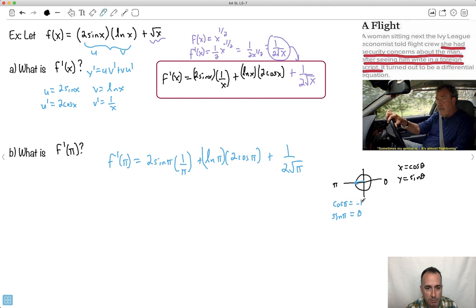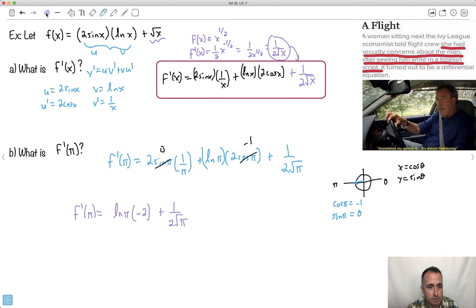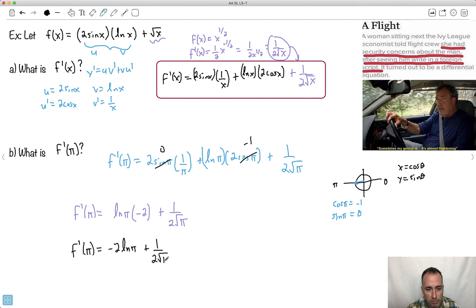That's good, because now I can replace. Anywhere I see a cos π, I make it minus one. Anywhere I see a sine π, I make it zero. So f primed of π equals - this whole thing cancels out - I just got natural log of π times minus two, all that plus one over 2√π. So f primed of π must be minus 2ln(π) plus 1/(2√π). This should be my answer. This is my exact value.